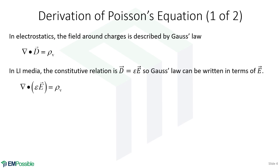In linear and isotropic media, the permittivity can still be inhomogeneous — it may be a function of position. So epsilon times E can replace D in the equation. But we're not free to bring the permittivity term outside of the divergence operation, because it's a spatial derivative and the permittivity can be inhomogeneous, so those derivatives will not be zero.